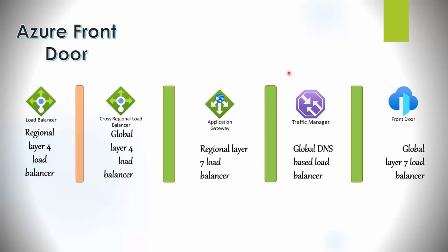Front Door is actually quite similar to the cross-regional or global load balancer, which I've done a separate video on. But that is layer 4, where the Front Door service is layer 7. So it provides additional layer 7 capabilities such as SSL decryption and encryption, scanning for threats, a built-in web application firewall, caching, compression, URL redirection, and more.